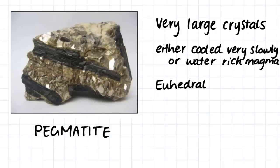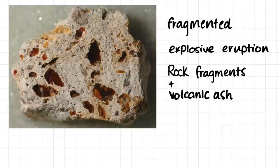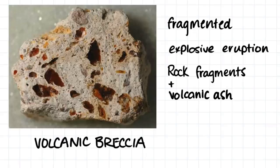This sample shows chunks of fragmented rock, which indicates that this rock formed during an explosive eruption. We can see the rock fragments which are then surrounded by volcanic ash. This sample is a volcanic breccia.